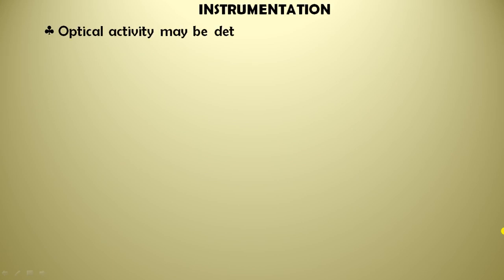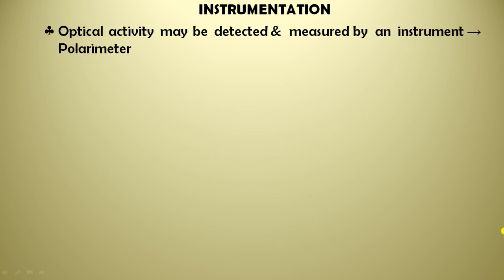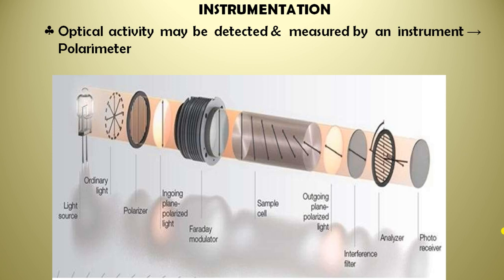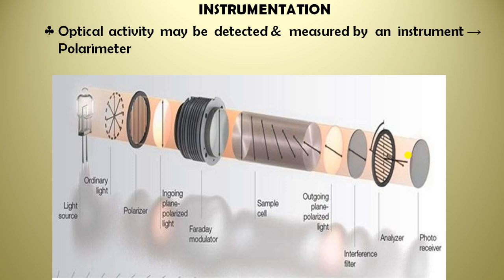Now we will move towards the instrumentation of polarimetry. Starting from the light source, you get unpolarized light. This goes through the polarizer, which converts unpolarized light into plane polarized light. Then there is the Faraday modulator, followed by the sample cell. Because of the optical activity of your substance, the plane polarized light gets rotated. The outgoing plane polarized light then passes through an interference filter and an analyzer, and finally reaches the photoreceiver.